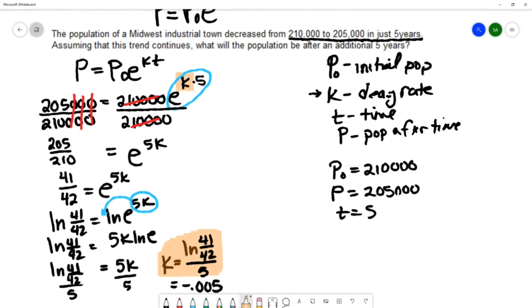Taking a look at the question that is posed in the second sentence, it says assuming that this trend continues, what will the population be after an additional five years?